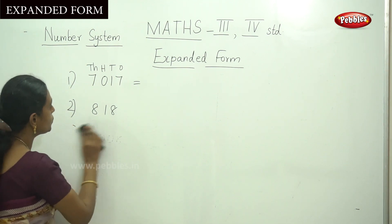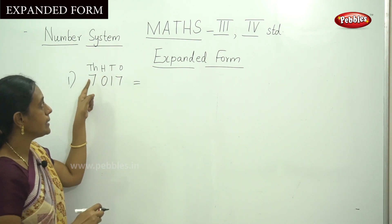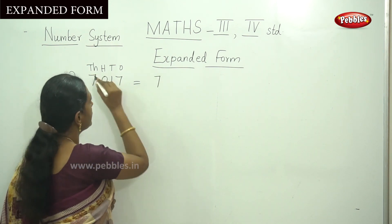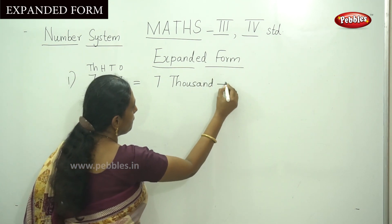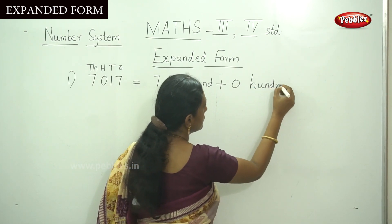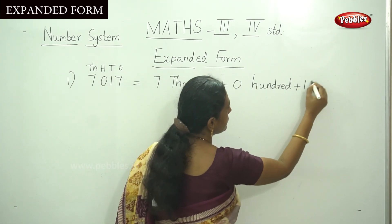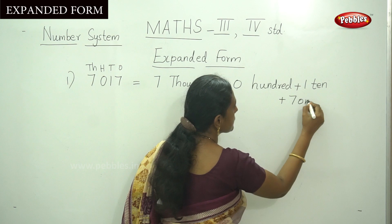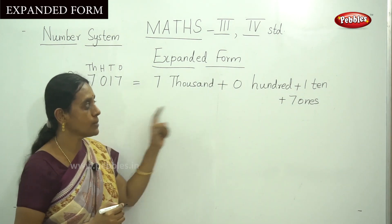First I will explain one sum in two ways. Write down the number from the right hand to the left hand side. That is seven thousand plus zero hundred plus that is one ten, and plus that is seven ones. This is the first way of the expanded form.